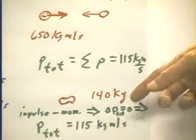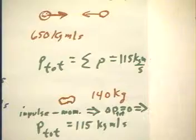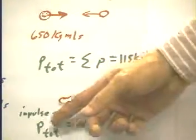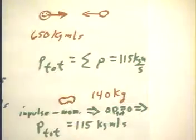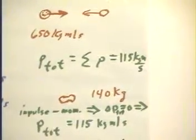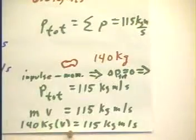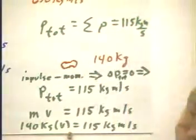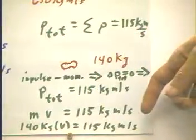From the fact that by Newton's third law the two forces exert equal and opposite forces on one another, we conclude from the impulse-momentum theorem that the total momentum is 115 kilogram meters per second. This means that if V is the velocity after collision, then MV after collision is 115 kilogram meters per second.